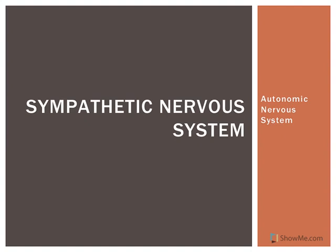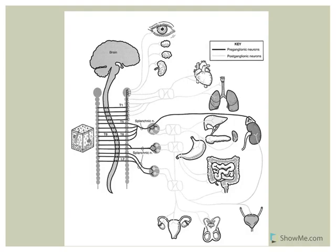The sympathetic nervous system is one of the two divisions of the autonomic nervous system. The targets for the autonomic nervous system are going to be visceral effectors. The effectors will include smooth muscle, cardiac muscle, and glands.